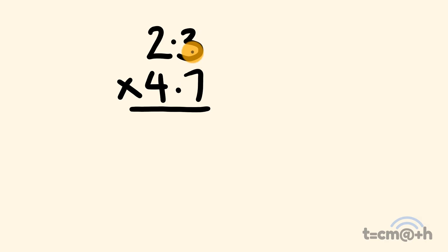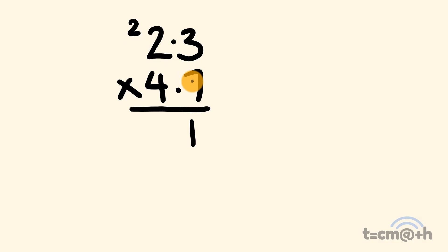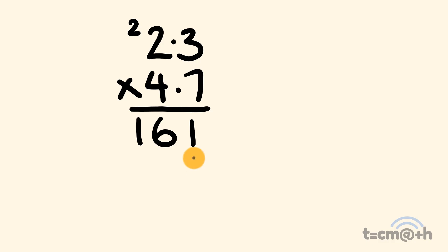So first off we have 3 times 7 which is equal to 21. We put the 1 there and carry the 2. Now we have 2 times 7 which is equal to 14, plus 2 which is equal to 16. So we have 161 on the top line.